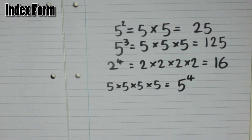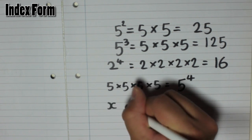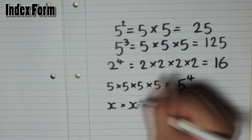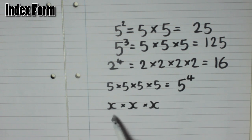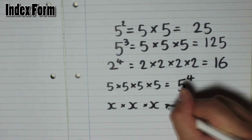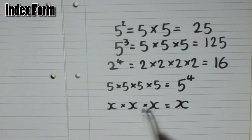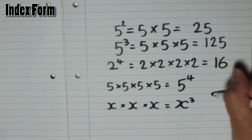You can also do it with letters. So for example, if we had an x times x times another x, in index form this would be x to the power of 3, because there are 1, 2, 3 of them.